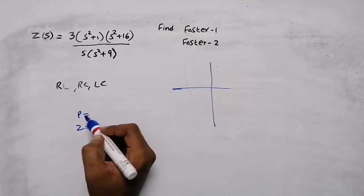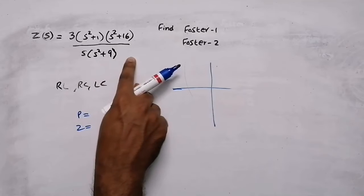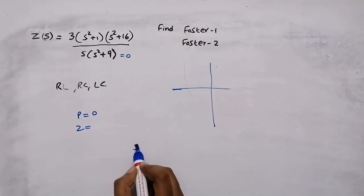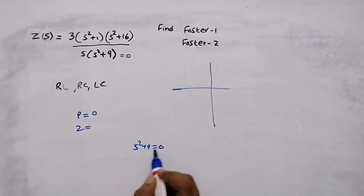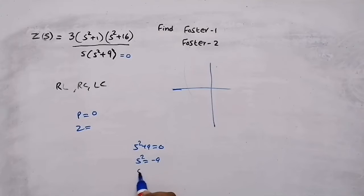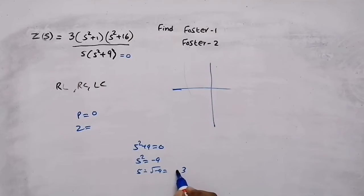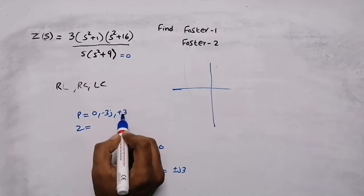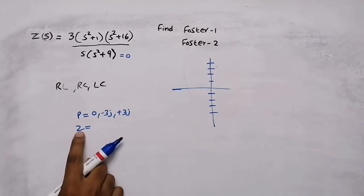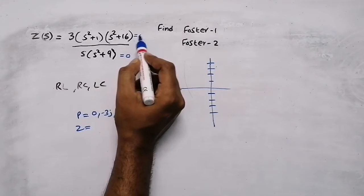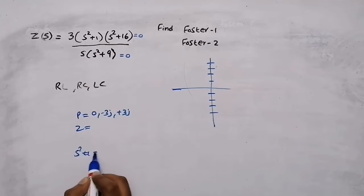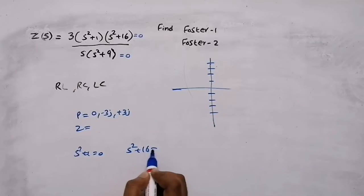To get the poles, equate the denominator equal to zero. When we equate the denominator to zero we get either s equal to zero or s squared plus nine equal to zero. From this we get s squared equal to minus nine, so s equals plus or minus j3. So the poles are at zero, minus 3j, and plus 3j. For zeros, equate the numerator equal to zero, giving s squared plus 1 equal to zero or s squared plus 16 equal to zero.